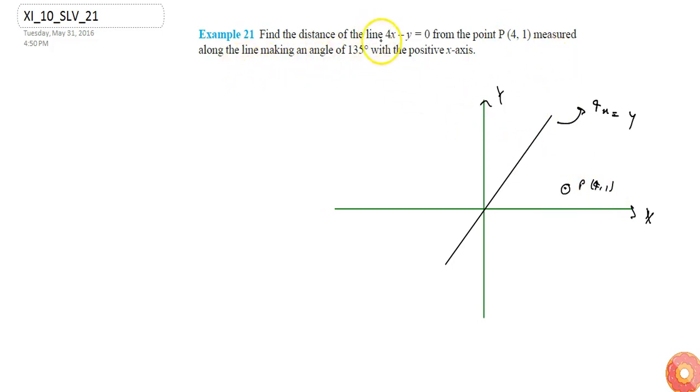Along the line making an angle of 135 degrees, so the line will pass through the point (4, 1) and make an angle of 135 degrees with the positive x direction. Let's say it is line L1 and this is line L2.